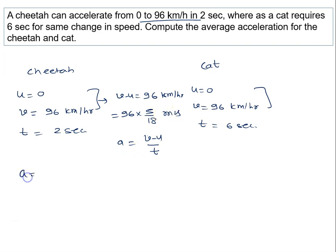So acceleration for cheetah is given by V minus U, that is 96 into 5 by 18 upon time. Time is given to us as 2 seconds. And acceleration for the cat is V minus U, that is same 96 into 5 by 18, but time in this situation is 6 seconds.